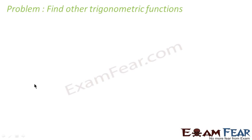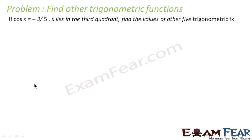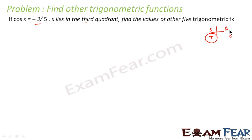I'd like to find other trigonometry functions. Here it says cos of x is minus 3 by 5 and x lies in the third quadrant. We have to find the value of the other five functions. We can see all sin, tan, cos — and in the third quadrant, cos is negative. So we have to find the other values of the functions.